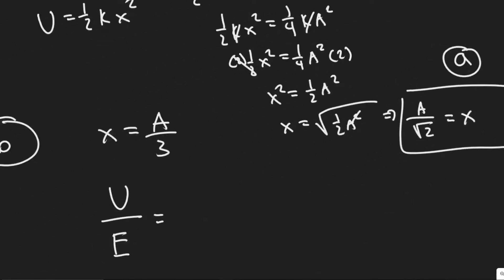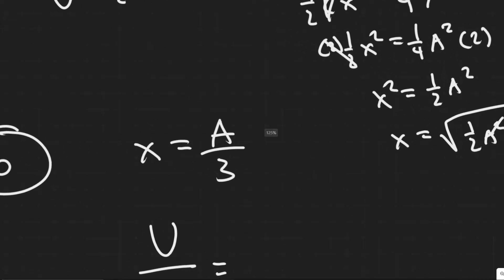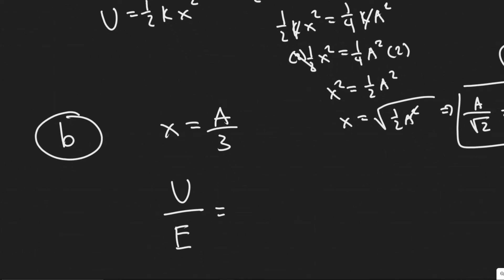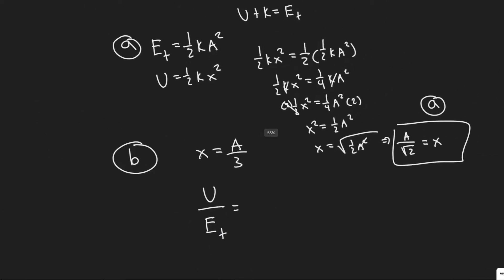Now let's move on to part B. They're telling us: what fraction of the total energy of a simple harmonic oscillator is kinetic and what fraction is potential when the displacement is one-third the amplitude? So x equals A divided by three. The approach is: if we can find the fraction of potential energy over the total energy when x equals A/3, then we know the potential fraction, and the remaining portion would be kinetic.